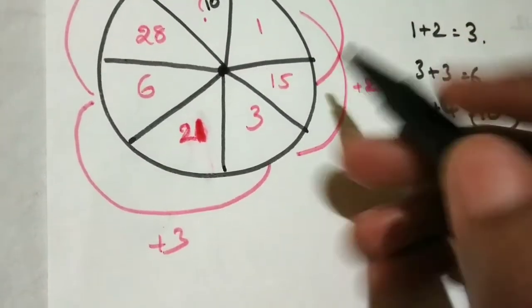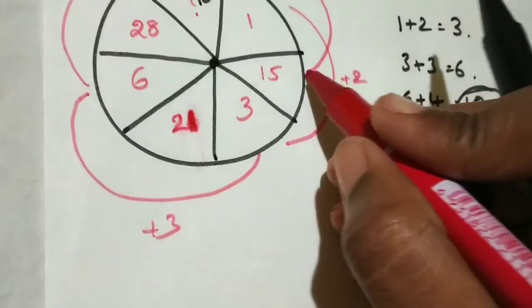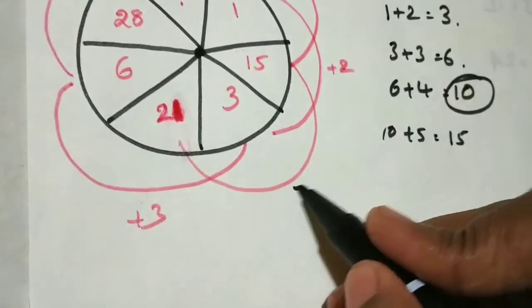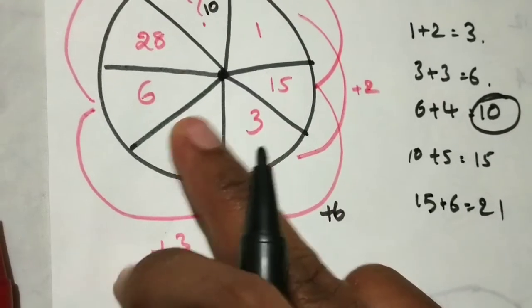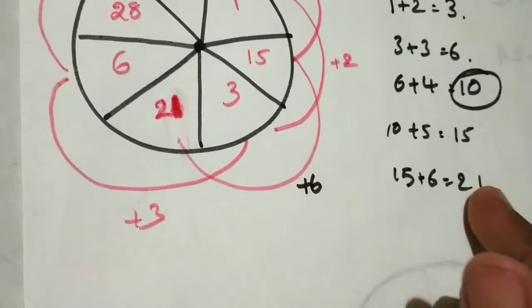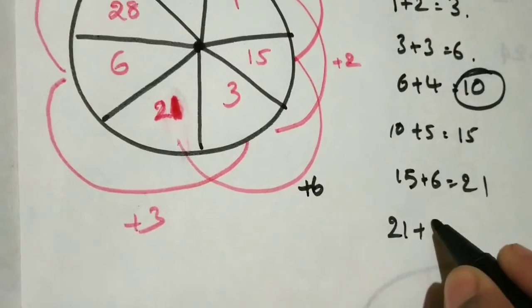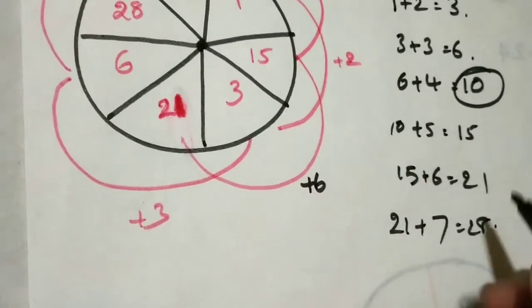Plus 5 is over, next what to be added? Plus 6. So 15 plus 6, 21 came or not? Yes. Now 21 plus 6 is over. Next how much we should add? 21 plus 7, then only 28 will come.